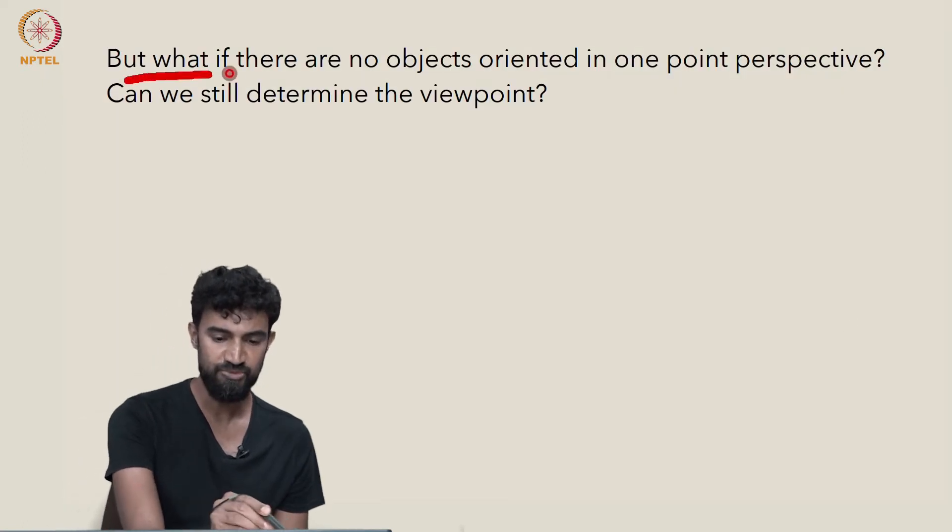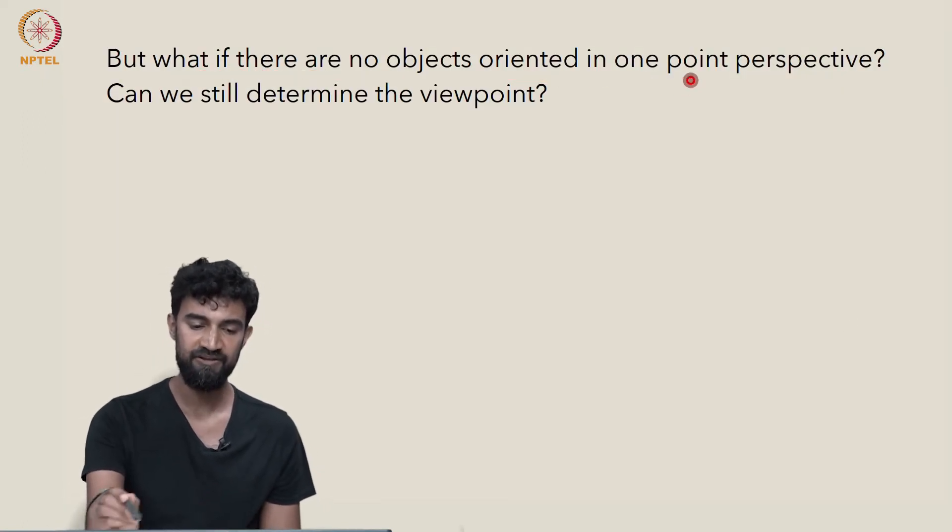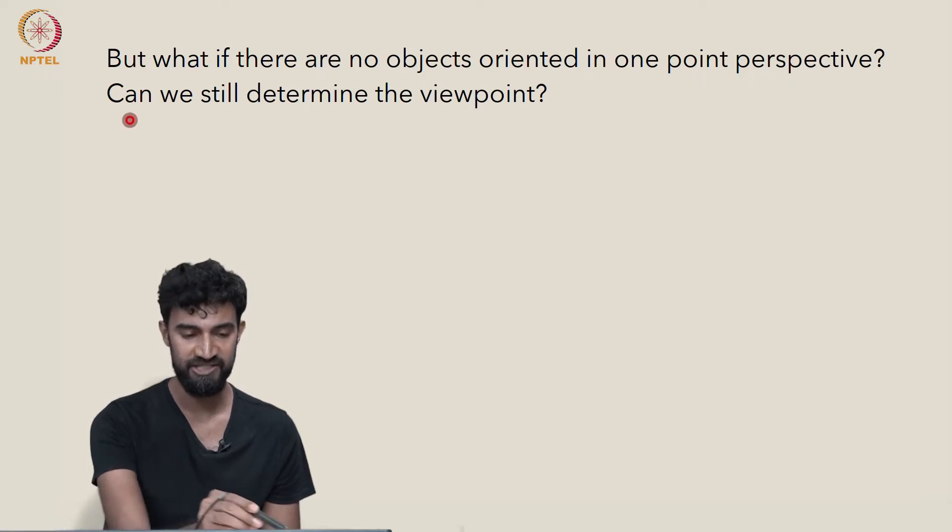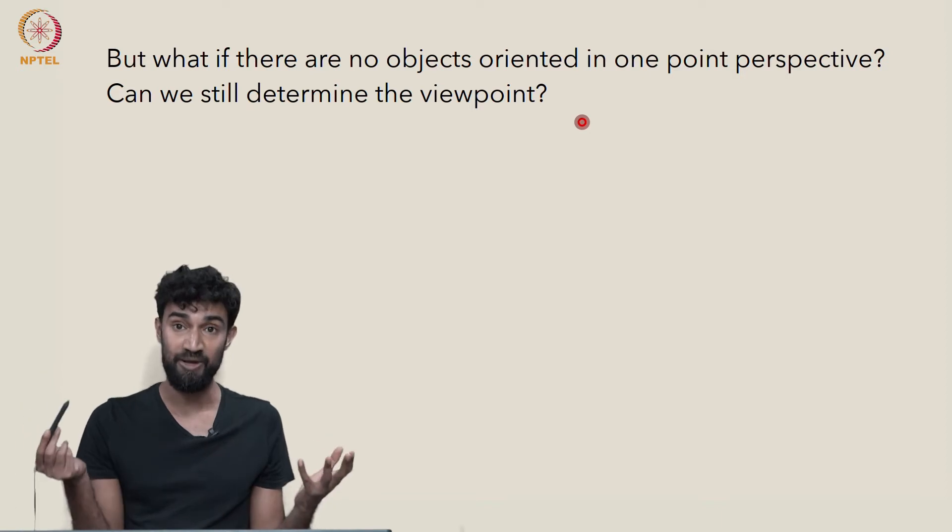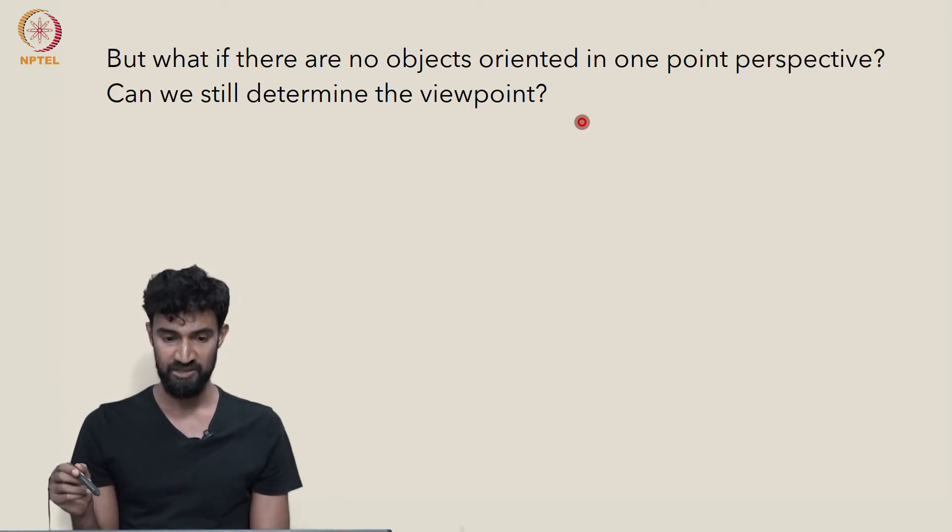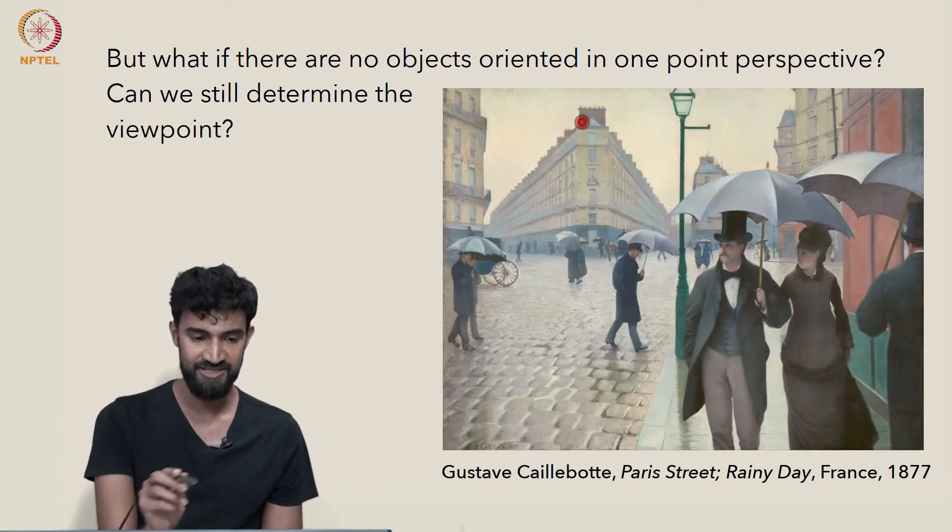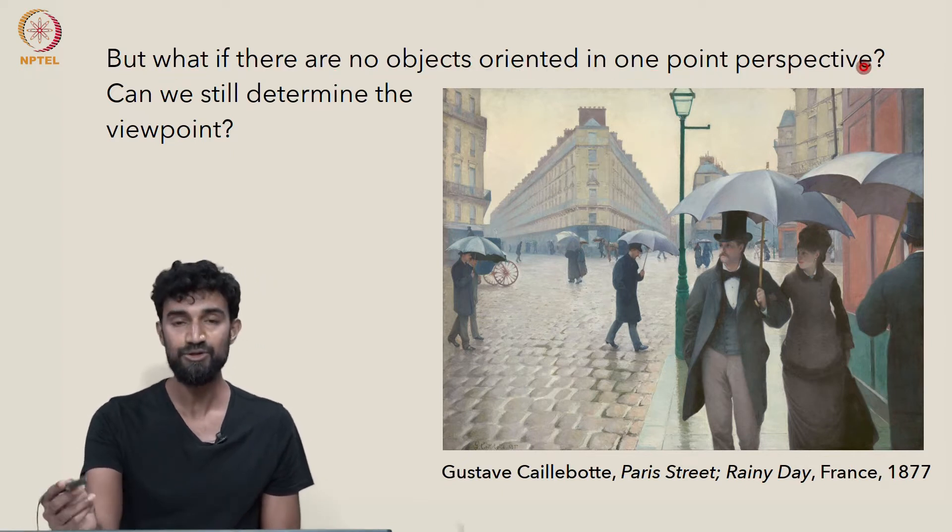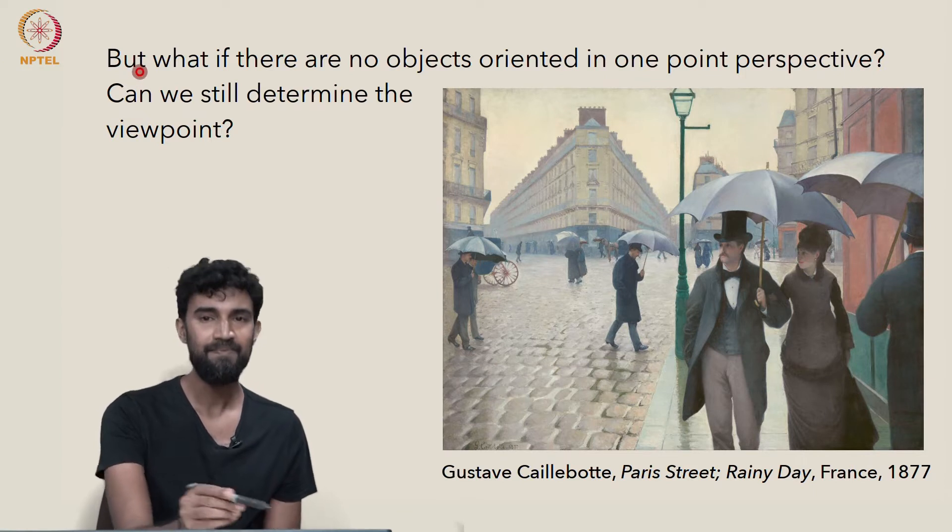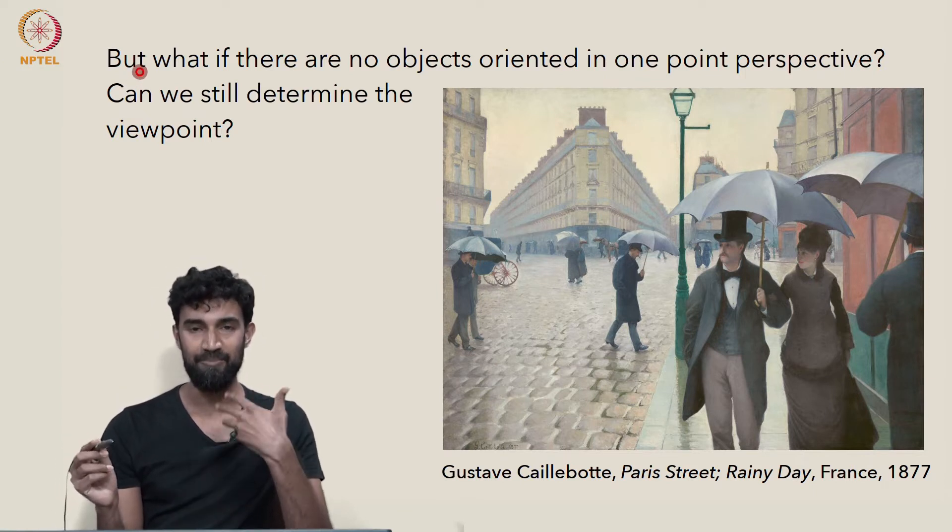So the question becomes a little more complicated if there are no objects oriented in one point perspective. In that case, can we still determine the viewpoint? Is there any way to determine the viewpoint? And in certain circumstances, it's quite difficult. But in others, it may not be as difficult. It requires us to know a little bit about the painting.